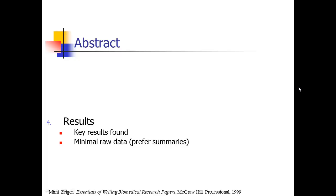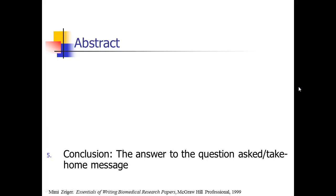Then you pull something out of the results section — it's going to be very minimal. Give a couple of key results; you won't be able to cram a lot of numbers in there. Summarize everything and maybe give one or two key numbers, like the main effect size or the main p-value. Then give a one-sentence conclusion — answer the question you asked or the hypothesis you were testing. What did you find? Was your hypothesis proven or not? Give an answer and a take-home message about what your data showed.